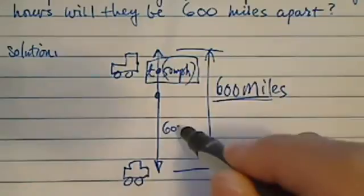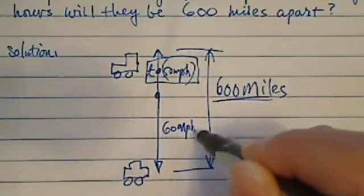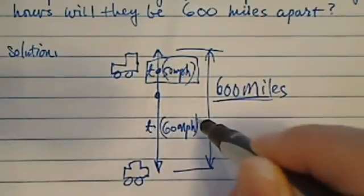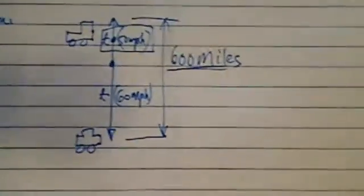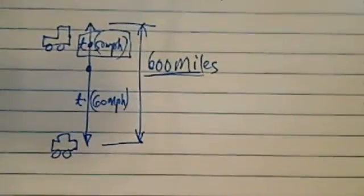And this one is traveling 60 miles per hour, traveling with t. Okay, so the basic equation here, let's move it on the side a little bit so you can see it.